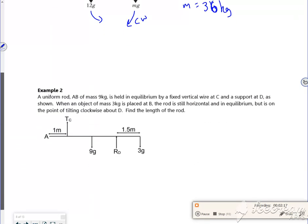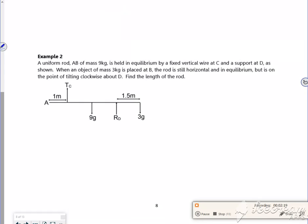Let's see if we can get two in as well on the same idea. I've got a uniform rod AB of mass 9kg held in equilibrium by a vertical wire at C and a support at D.